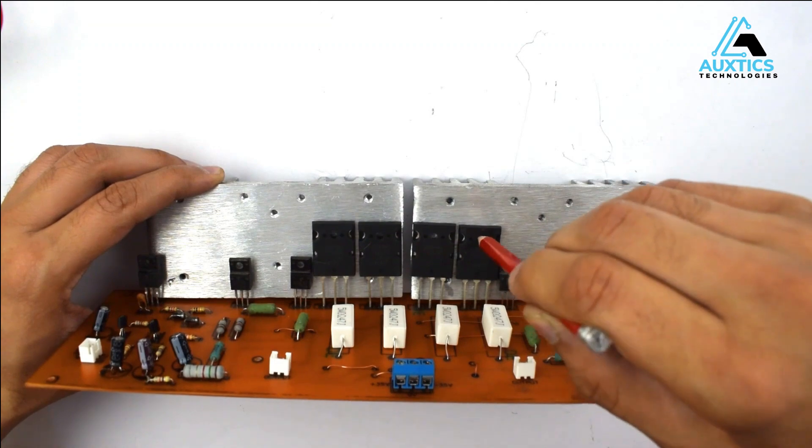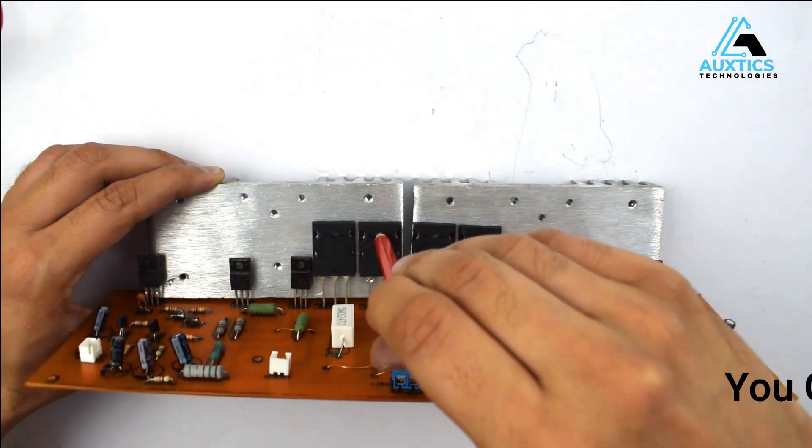Connecting the heat sink is very simple. I will mark all the holes with the pencil and then drill accordingly. You must have a proper drill press or you can go to hardware shop for drilling the holes.